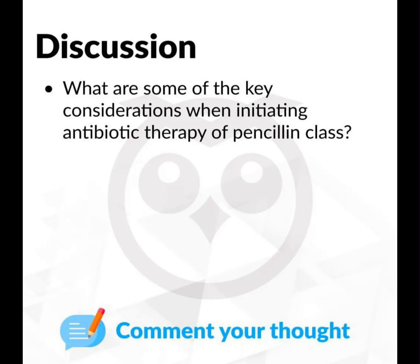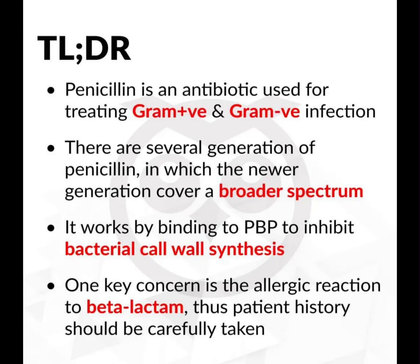Discussion: What are some of the key considerations when initiating antibiotic therapy of the penicillin class? Please share your thoughts in the comment box. Key points: Penicillin is an antibiotic used for treating gram-positive and gram-negative infections. There are several generations of penicillin, with newer generations covering a broader spectrum. It works by binding to PBPs to inhibit bacterial cell wall synthesis. One key concern is allergic reaction to beta-lactam, so patient history should be carefully taken.